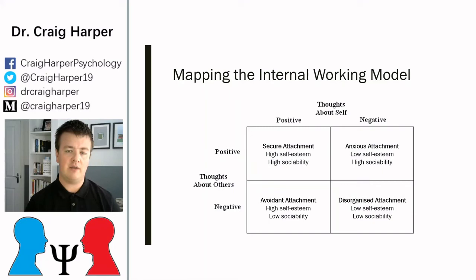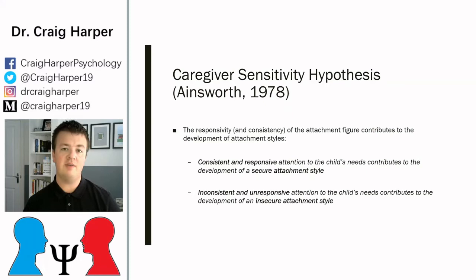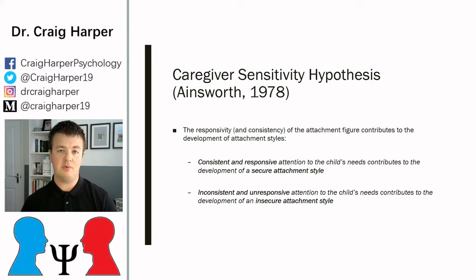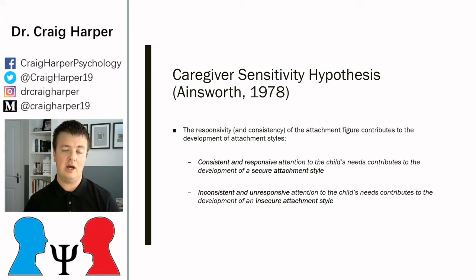The caregiver sensitivity hypothesis is another of Ainsworth's key ideas, looking particularly at the consistency and responsiveness of a primary caregiver. People who are securely attached typically have consistent and responsive attention from their primary caregiver — they know that support will always be there for them. Those who are insecurely attached — whether anxiously, avoidantly, or in a disorganized way — don't have that security. The responsiveness and attention from a primary caregiver for insecurely attached people is inconsistent and unresponsive to the individual's needs.